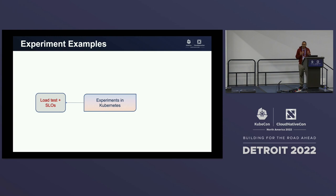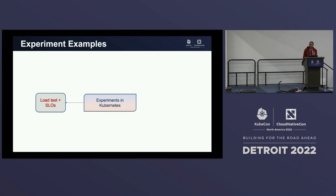I'm sure you're familiar with different types of experiments. The simplest type of experiment is load testing your application. Let's say it's a service that you're deploying. You want to make sure that it can handle realistic load and its latency and error-related properties are okay, even in the midst of real-world load conditions. That's a load test experiment.